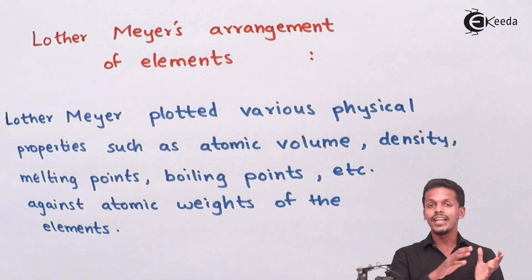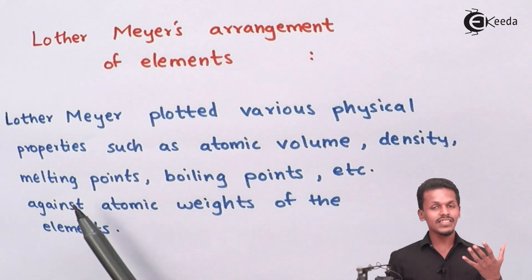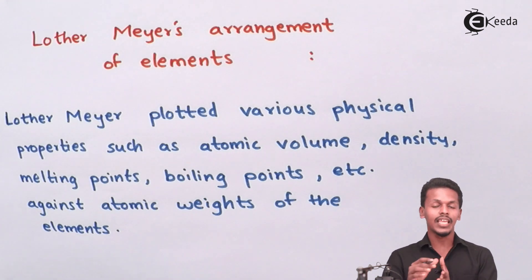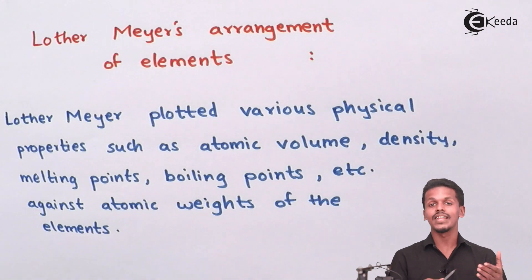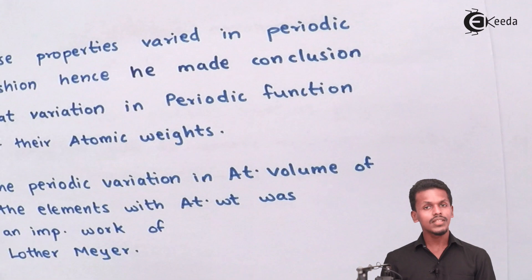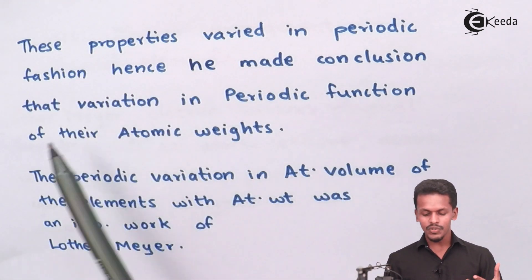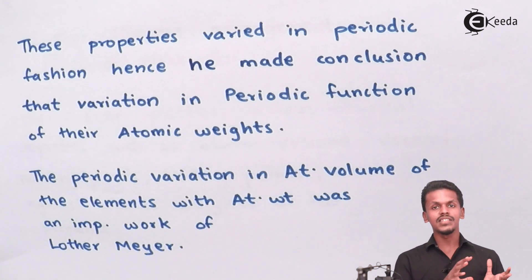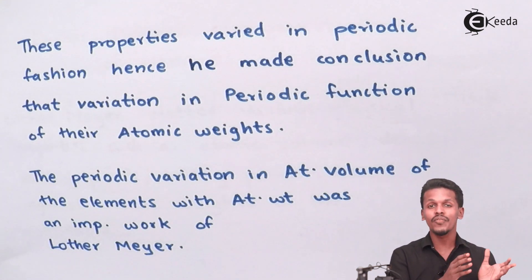Based on this arrangement, what we observed is that the properties varied in a periodic fashion. Hence, Lothar Meyer concluded that these periodic variations are a function of atomic weight. The elements were arranged so that their similar properties and variations could be clearly seen, all driven by differences in atomic weight.